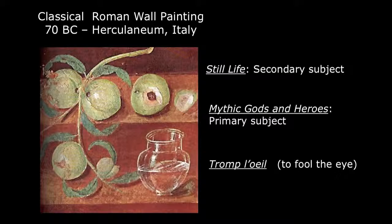Throughout the Middle Ages and Renaissance in Europe, still-life painting remained primarily an adjunct to Christian religious subjects and conveyed religious and allegorical moral meanings to viewers. Patrons believed that historical and religious narrative scenes that included figures were the highest form of art.